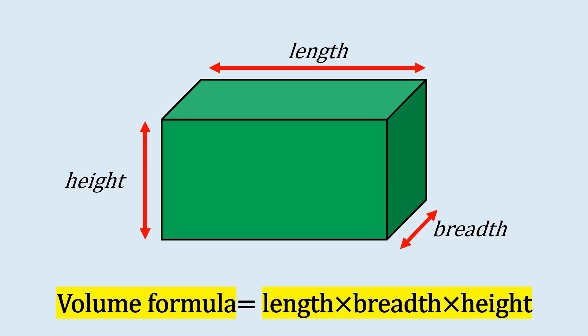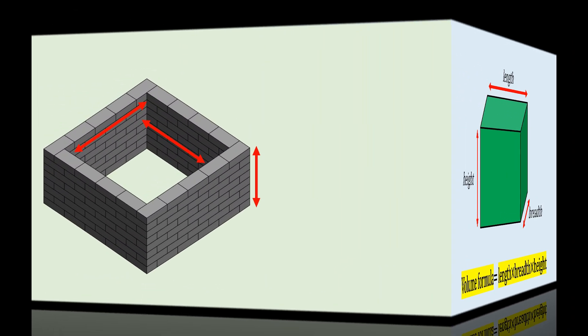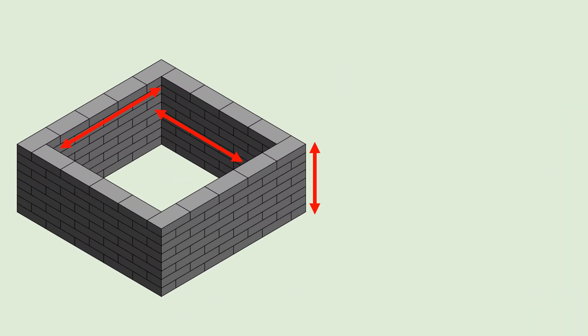The formula we require here is the volume of a cuboid. Volume of a cuboid is defined as length into breadth into height. Let me now explain three simple steps to calculate the capacity of a water tank if the measurement is taken in feet.